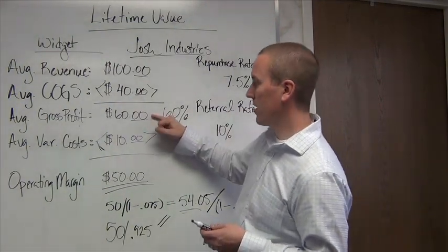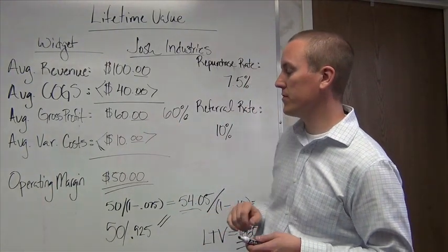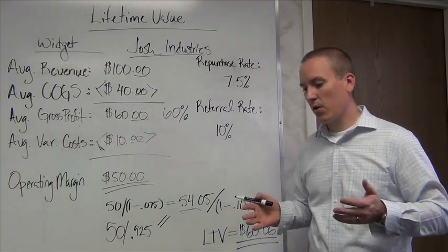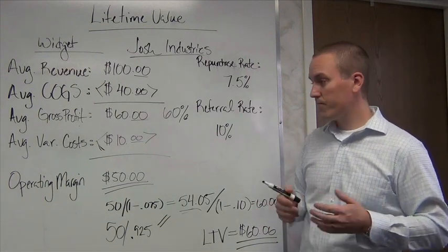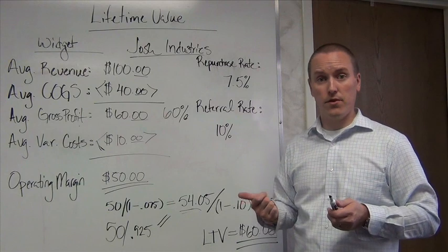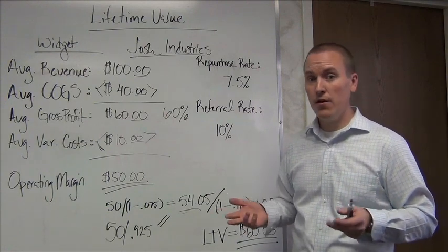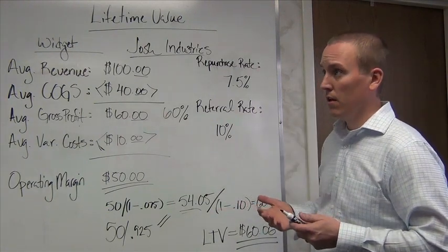Okay, now from the $60, I'm going to want to subtract my average variable costs. So my variable costs are any costs that vary every time, or increase every time I sell a widget. So I wouldn't include rent or utilities, things like that, but I would include manpower.